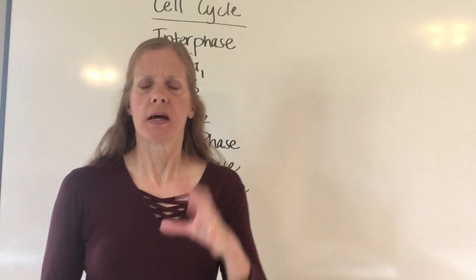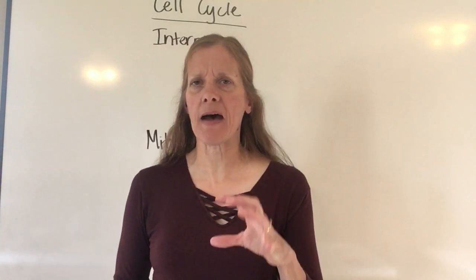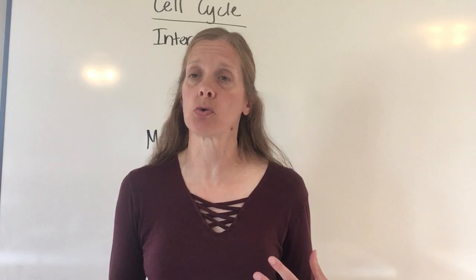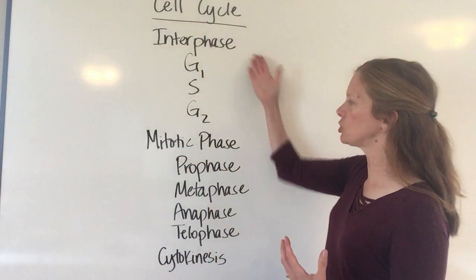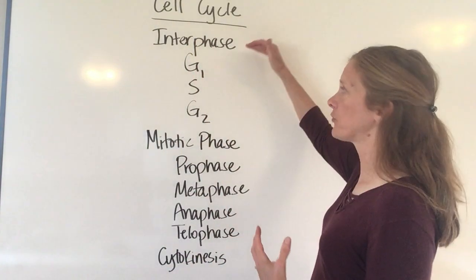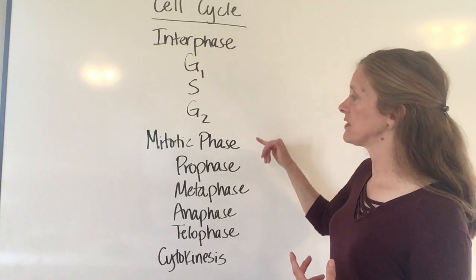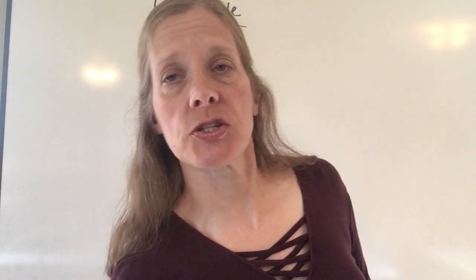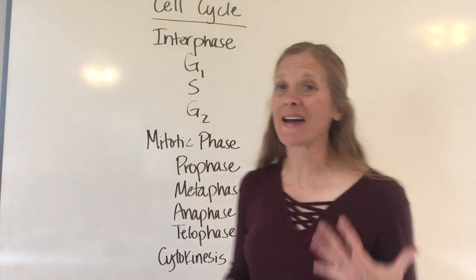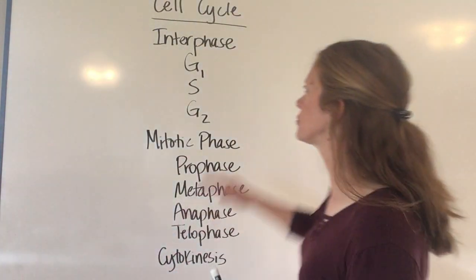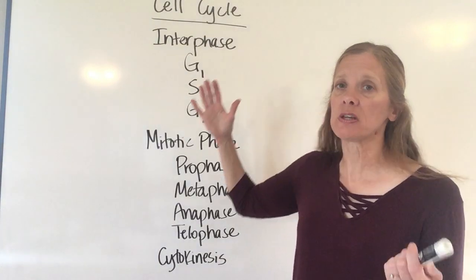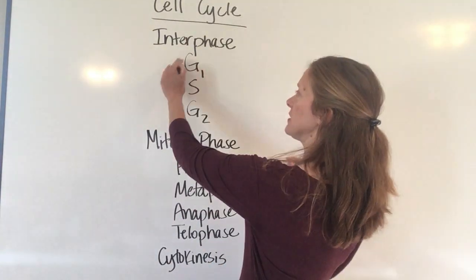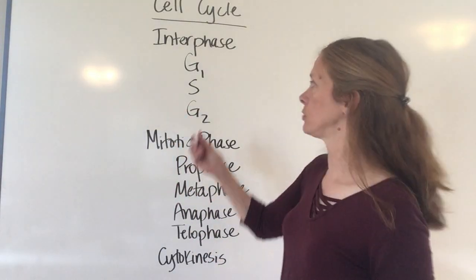Cells have a life cycle — a cell cycle — that they're going to go through, and it's made up of two specific phases. The first is called interphase and the second is called the mitotic phase. Interphase is where cells spend the vast majority of their time. That's when they're just living and doing life, and interphase is divided into three components.